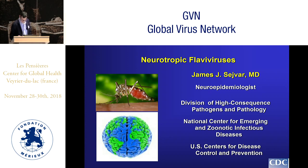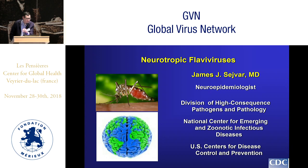This speaker is from the Centers for Disease Control and Prevention in Atlanta, United States, and he's going to talk about flaviviruses. Thank you very much. I'd like to thank the organizers for the opportunity to talk to you this morning. I'm going to talk about flaviviruses — this is a family that contains a number of members that lead to significant peripheral and central nervous system dysfunction.